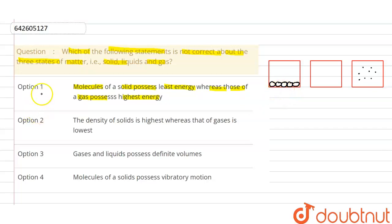Now next, the density of solid is highest whereas that of gas is lowest. That is also correct. What is density? Density equals to mass upon